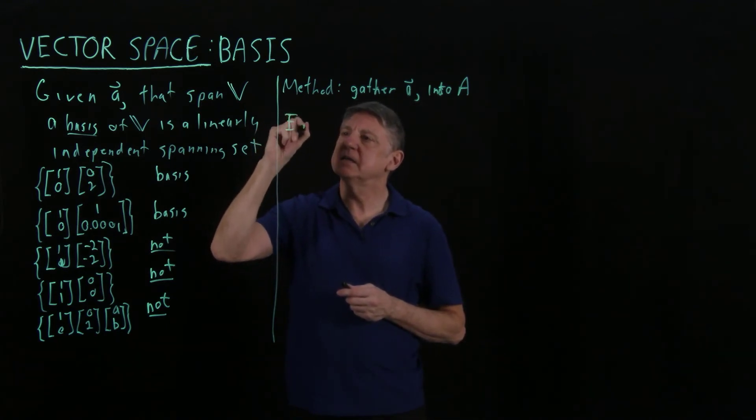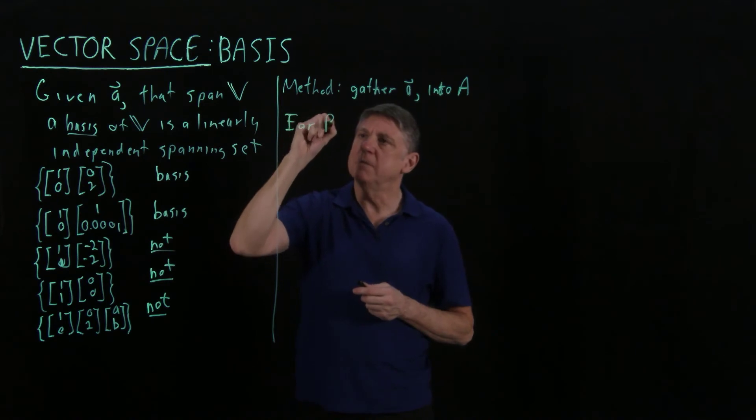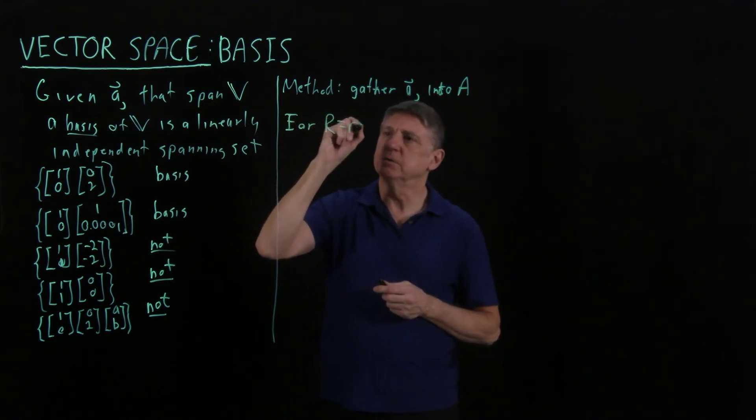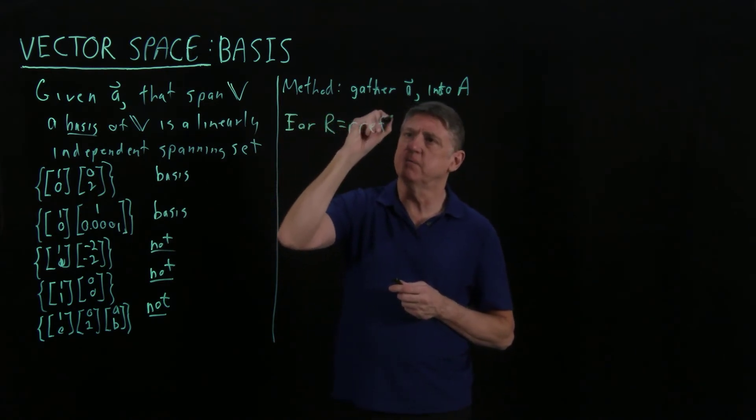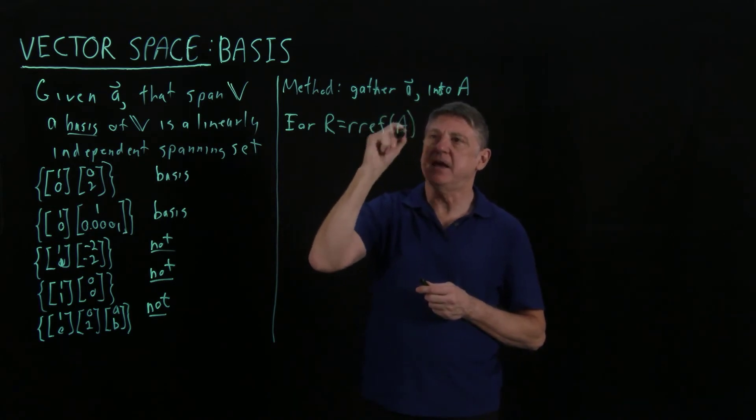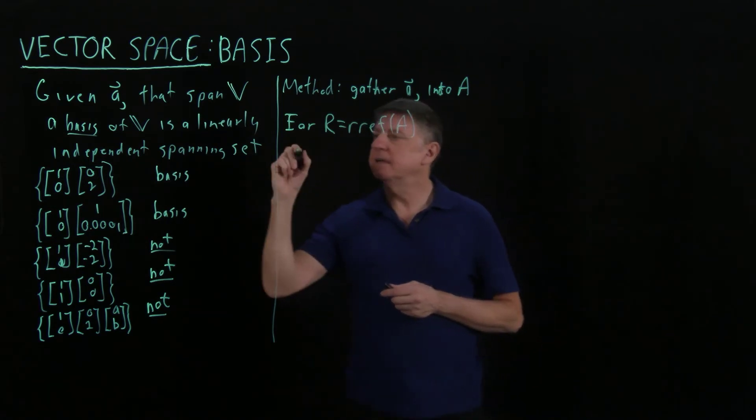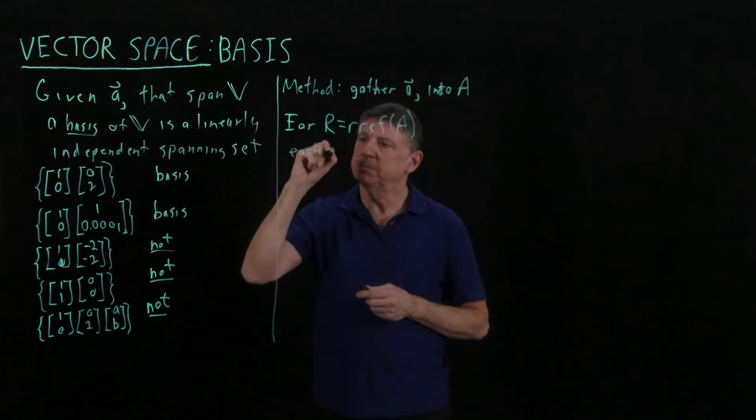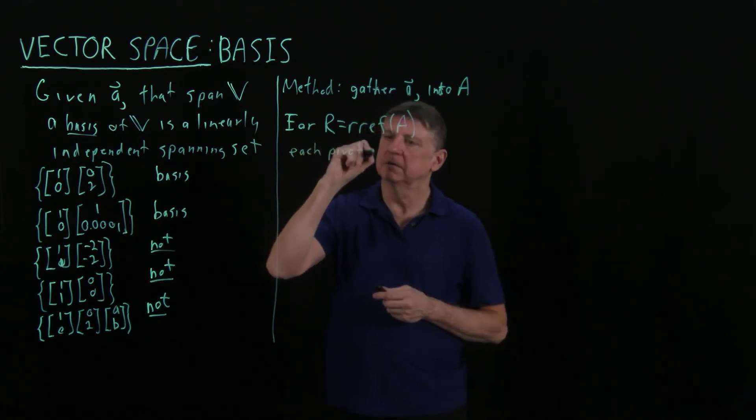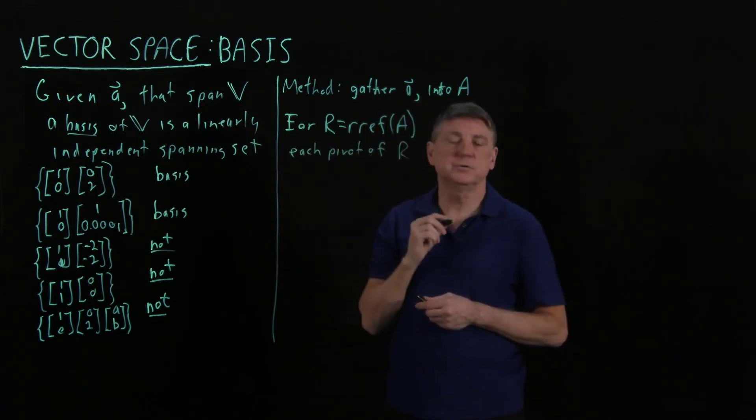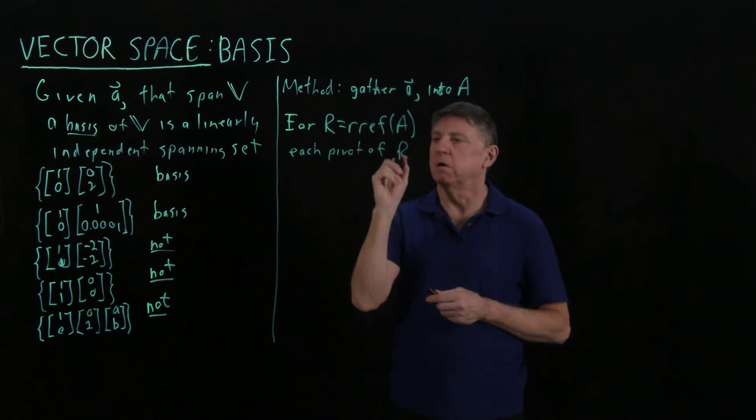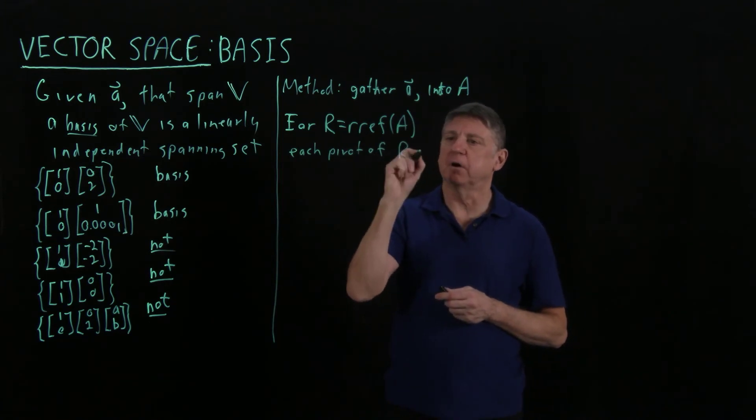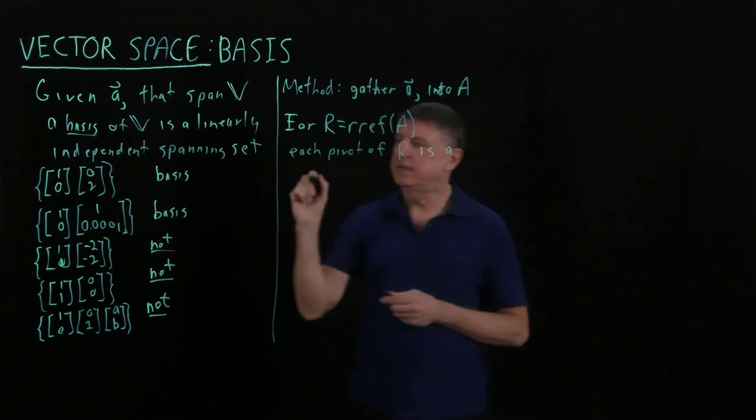The idea is let's gather all the vectors together, and then what we'll say is that for a matrix R that is the reduced row echelon form of A, that each pivot of the reduced row echelon form R...